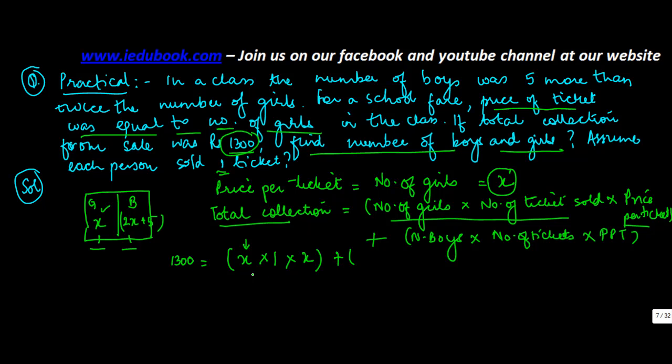Plus - so this was the collection from the girls. Number of boys in the class: 2x plus 5. 2x plus 5 into number of tickets. Each boy sold one ticket. 2x plus 5 into price per ticket, again x.